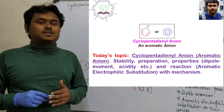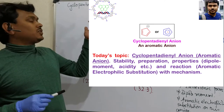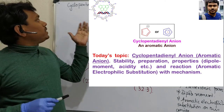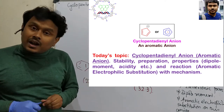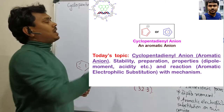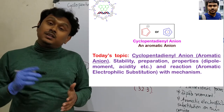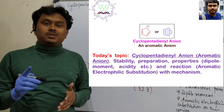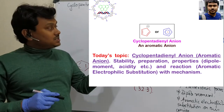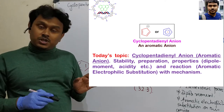Today we will discuss an important topic related to aromaticity, which is the cyclopentadienyl anion. Previously I discussed the cyclopentadienyl cation, which is anti-aromatic, but this anion is aromatic. So there are a lot of things to be learned.